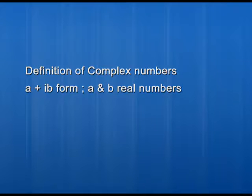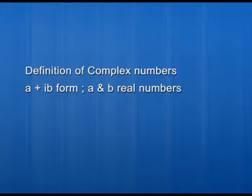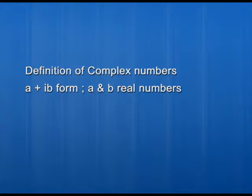Now let us come to the definition of complex numbers. Numbers of the form a plus ib are called complex numbers, where a and b are real numbers. Now you must be thinking: if we are taking a sum of two numbers, then why are we giving it a different name? In the form a plus ib, a and b are real numbers, but I did not say anything about i. In fact, i cannot be real, and if i cannot be real, their sum cannot be defined. That is why we cannot say that a plus ib is a real number, and so we gave it a different name: complex numbers.